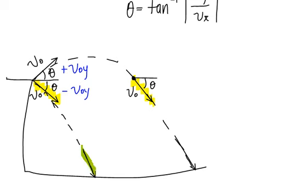What do you think about the velocity we strike the ground with when we throw it below the horizontal and the velocity it strikes the ground with when we throw it above the horizontal? They're the same.